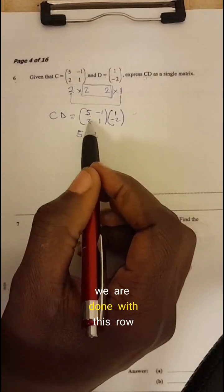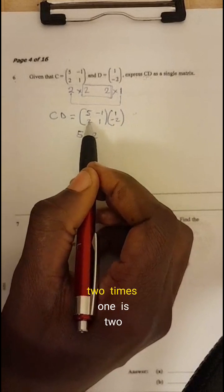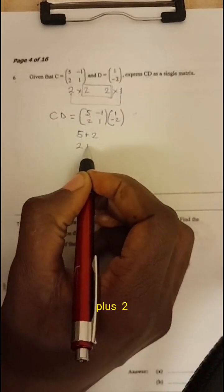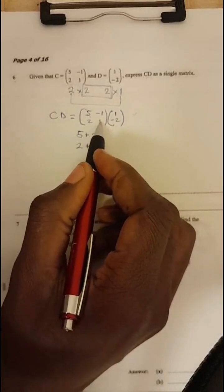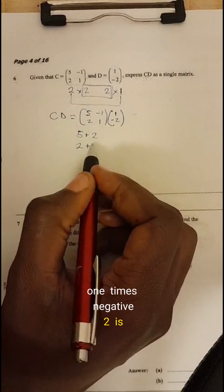So we are done with this row and the column. So we come to this, two times one is two, plus one times negative two is negative two.